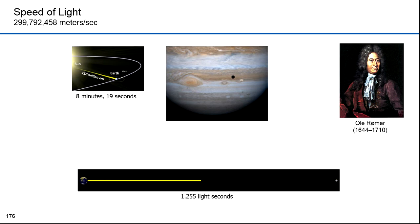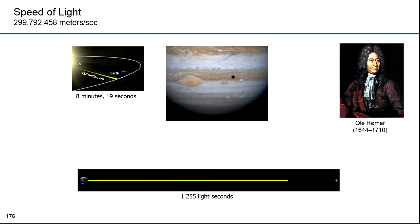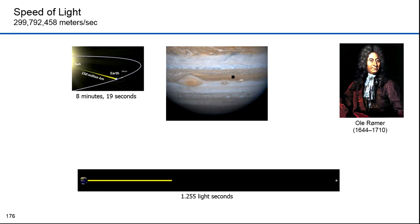The first quantitative estimate of the speed of light was made in 1676 by Ole Romer. He first observed that the periods of Jupiter's innermost moon Io appeared to be shorter when the Earth was approaching Jupiter than when receding from it. He thus concluded that light travels at a finite speed and estimated that light reflected on Io would take 22 minutes to reach the Earth. Christian Huygens combined this estimate with an estimate for the diameter of the Earth's orbit to obtain an estimate of the speed of light of 220,000 kilometers per second, 26% lower than the actual value.